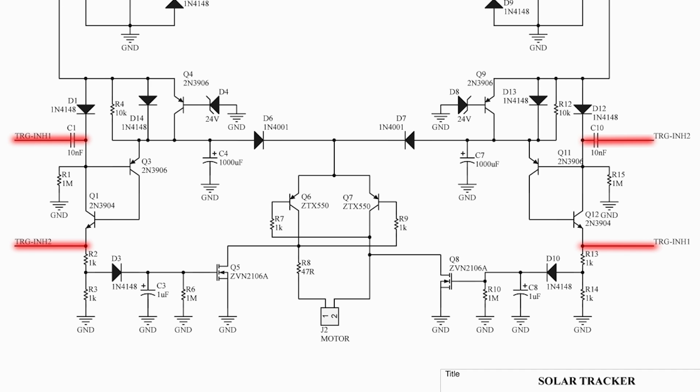If we imagine a positive going pulse coming into C1 from the opposite side, we can see how that would immediately cause the voltage on R1 to rise. This rise in voltage would immediately cut Q3 off by reverse biasing its base emitter junction, which prevents it from triggering.